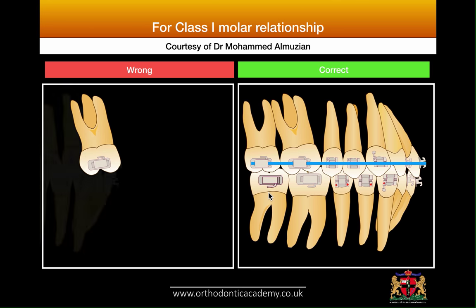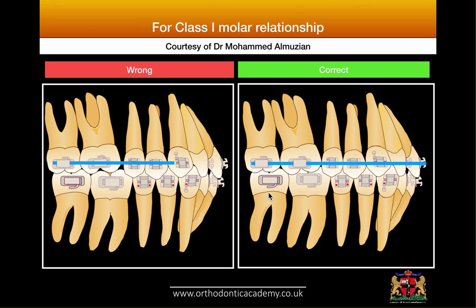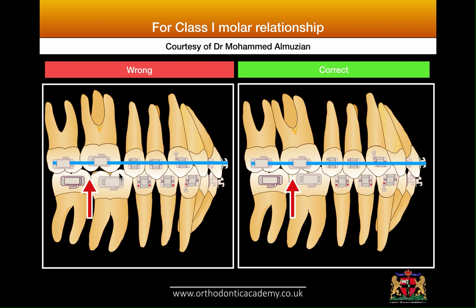However, when you place the bracket parallel to the occlusal line, this will result in a gap between the distobuccal cusp of upper six and the embrasure between lower six and lower seven. You will achieve a Class 1, but it is a Class 1 Angle molar relationship — you are not going to get a Class 1 Andrews relationship if you are not placing the molar tube in the way explained.